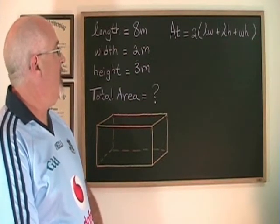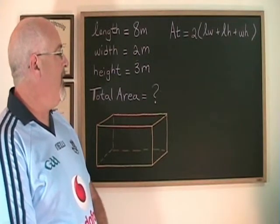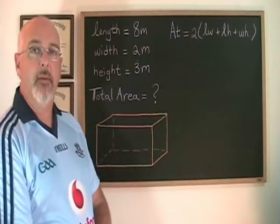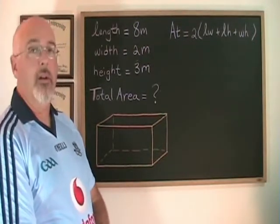In this first example, we are given the length, width, and height of this rectangular prism and we are being asked to find its total area.